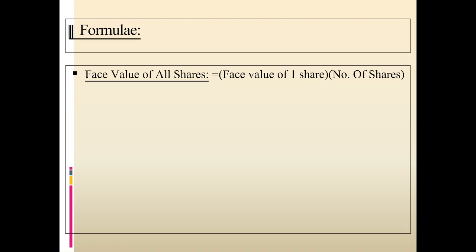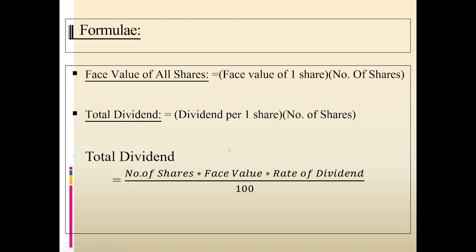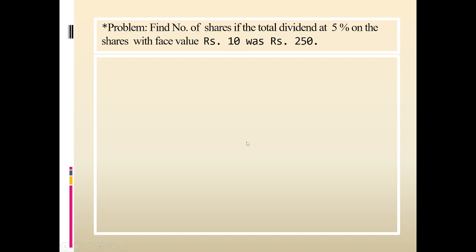Face value of all shares is face value of one share multiplied by number of shares. Total dividend is dividend of one share multiplied by number of shares. There is one more formula to find total dividend: number of shares × face value × rate of dividend ÷ 100.